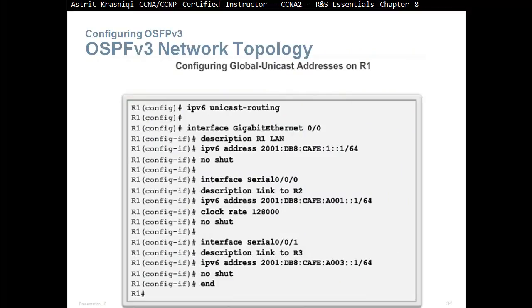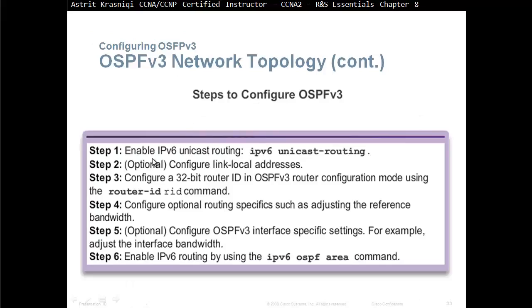To configure OSPFv3, first enable IPv6 unicast routing as a general configuration step. Then go to each interface, give a description, assign an IPv6 global unicast address, and issue no shutdown. The OSPFv3 configuration steps are: enable unicast routing; optionally configure a link-local address (if you don't, it will be derived from the MAC address); assign a 32-bit router ID using the router-id command; optionally configure routing specifics such as adjusting the reference bandwidth; optionally adjust interface-specific settings such as interface bandwidth; and finally enable OSPF on the interface using the ipv6 ospf area command.